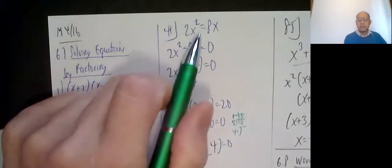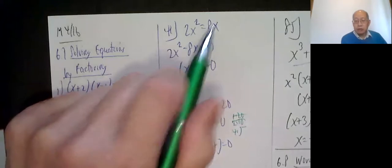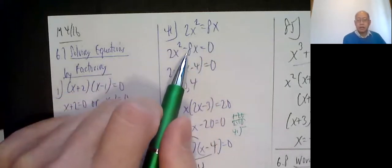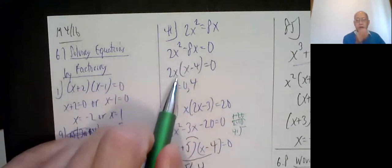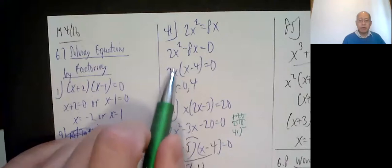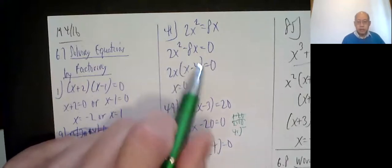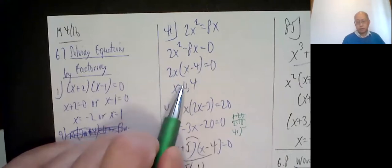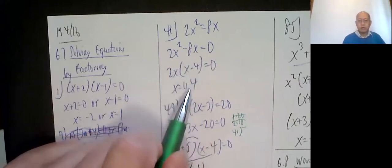Number 41: 2x squared equals 8x. The right-hand side is supposed to be 0, so I subtract 8x on both sides. Factor out the greatest common factor 2x, x minus 4. By the zero factor property, either this is 0 or this is 0. What number makes 2x equal to 0? 0. What number makes this 0? 4.